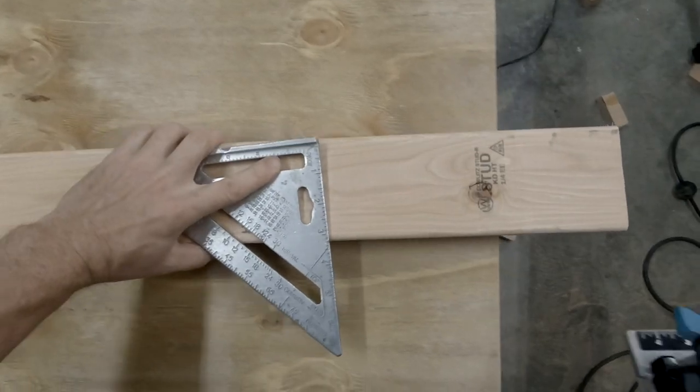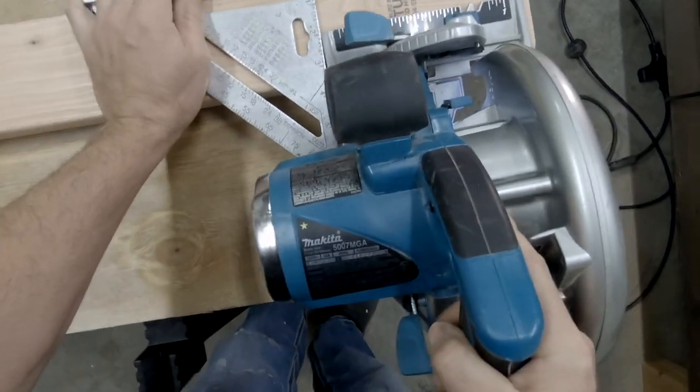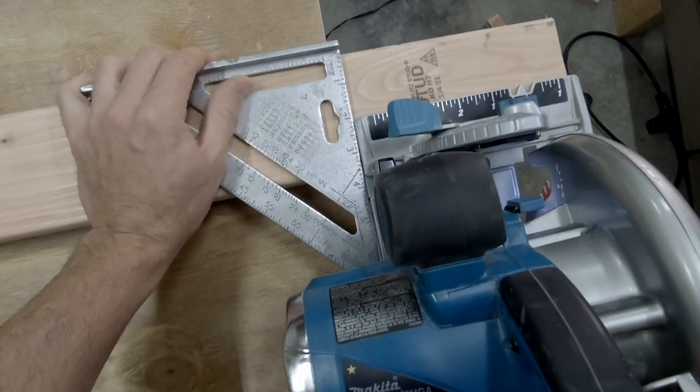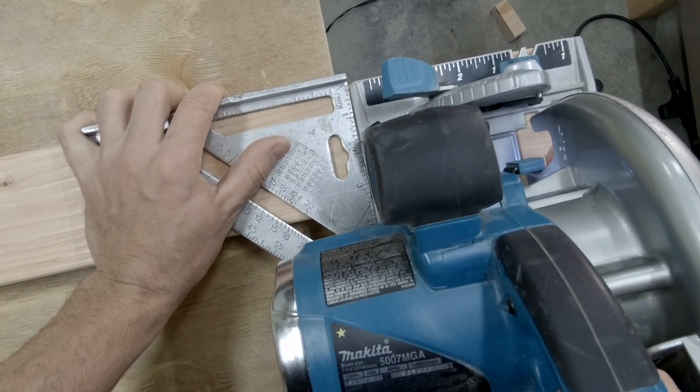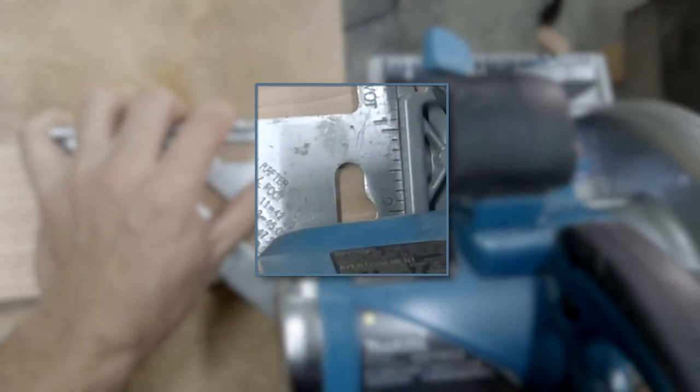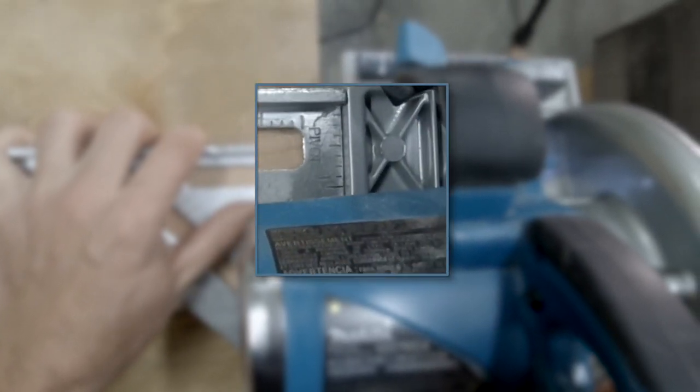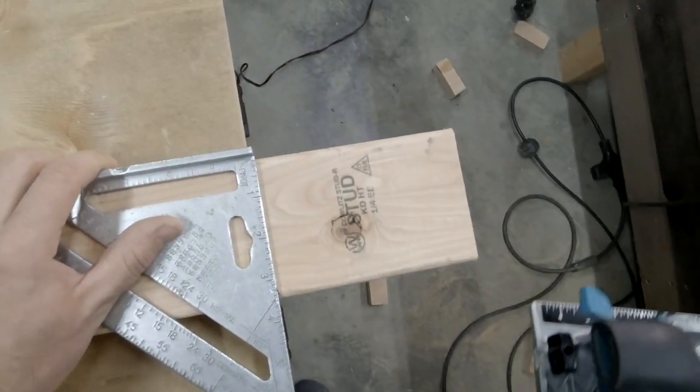And lastly, number five, it's used as a saw guide. Simply slide the speed square up to the shoe of the saw, line up the saw's blade with your marked pencil line, and push the saw slowly through the material, trying to keep the shoe tight up against the speed square. And there you have it.